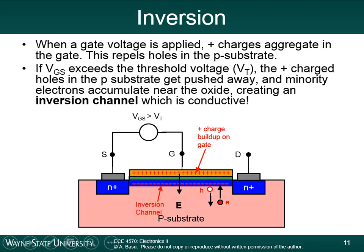The minority electrons form a negatively charged layer just under the gate. If you take a P-type material, remove all the holes, and keep only the electrons, you've basically switched it to an N-type material. This is the intuition behind the concept of inversion. We start with P-type material, drive all the holes away, reduce the hole concentration, and increase the electron concentration — effectively switching it to N-type. Now we have an N-type source, N-type drain, and an N-type channel connecting the two, so you can get electrical conduction between the drain and the source.